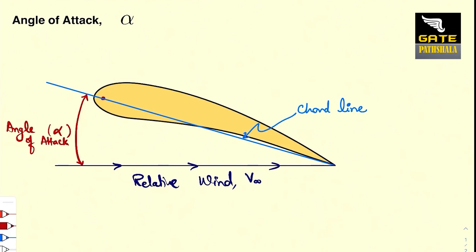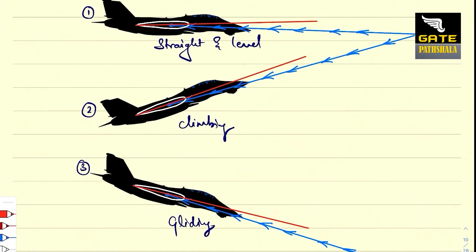Very often, people think that angle of attack is always the angle between the horizontal flow and the chord line, which is wrong. To understand it more clearly, let us consider three different cases which would help us understand what is basically the relative wind and the angle of attack. Many people think the angle of attack in certain cases is zero, greater than zero, or negative — which is absolutely wrong. So, what is basically relative wind? Relative wind comes in a direction opposite to the motion.